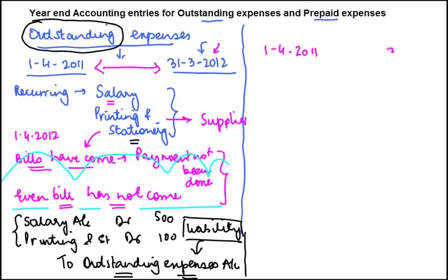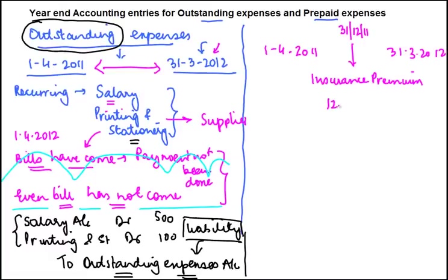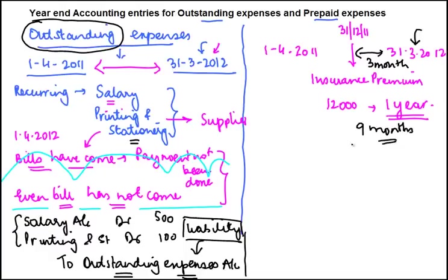Let's understand what prepaid expenses mean. Say we are again talking about 1st April 2011 to 31st March 2012. On 31st December 2011, I pay an insurance premium of rupees 12,000 for one year. When I reach 31st March, three months have elapsed and nine months of benefit is remaining.